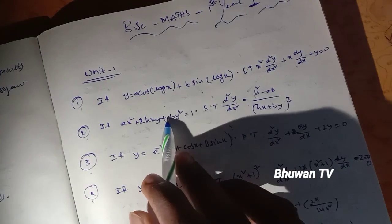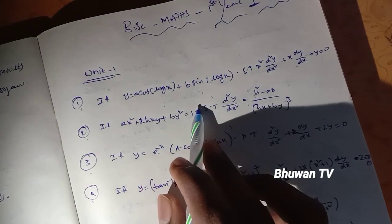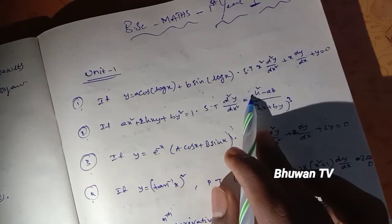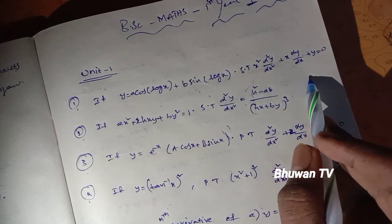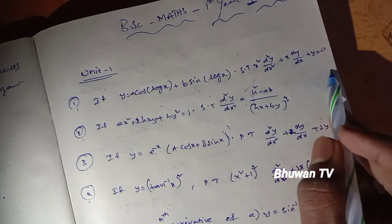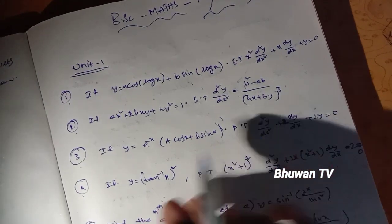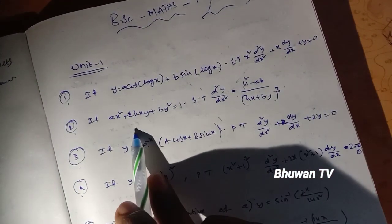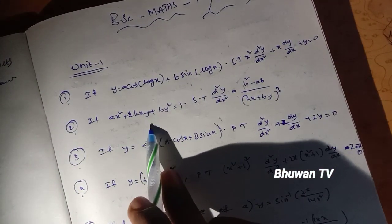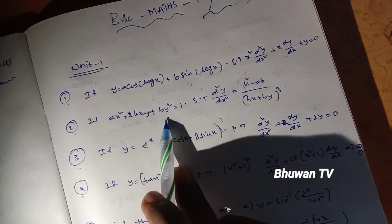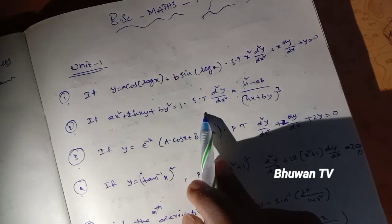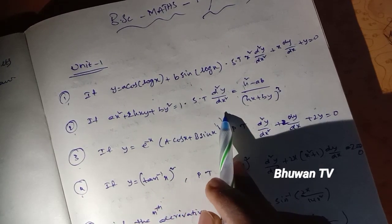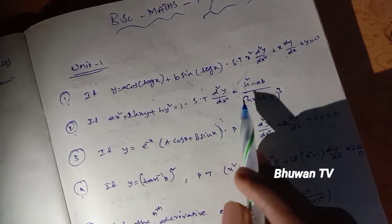First question: if y equals a cos(log x) plus b sin(log x), show that x² d²y/dx² plus x dy/dx plus y equals 0. Second question: if x² plus 2hxy plus by² equals 1, show that d²y/dx² equals (h² minus ab) divided by (hx plus by)³.